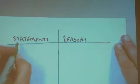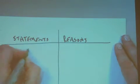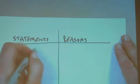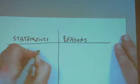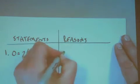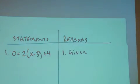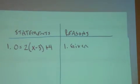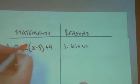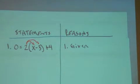Let's do the problem. 0 is equal to 2 times the quantity x minus 3 plus 4. That is what's given. Now remember, when I write it in the orange, it's not actually part of the proof — it's the mental math I need to do.